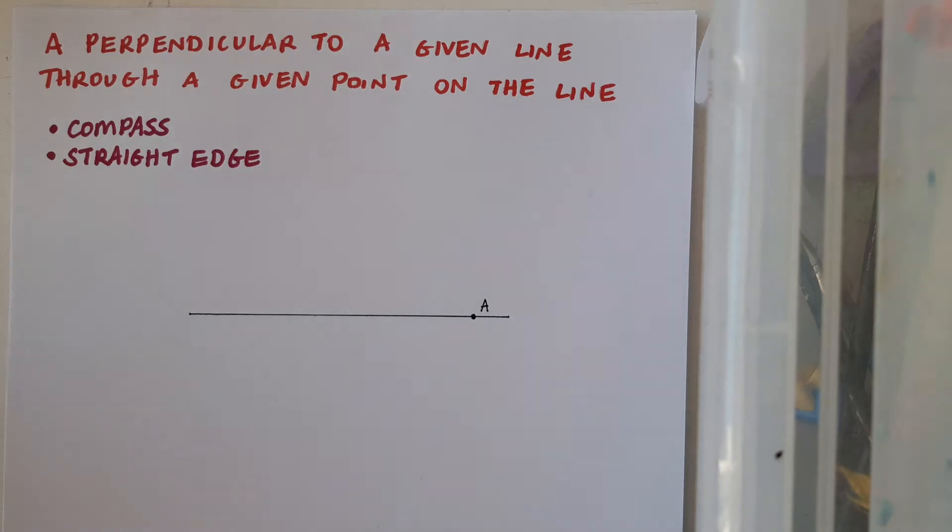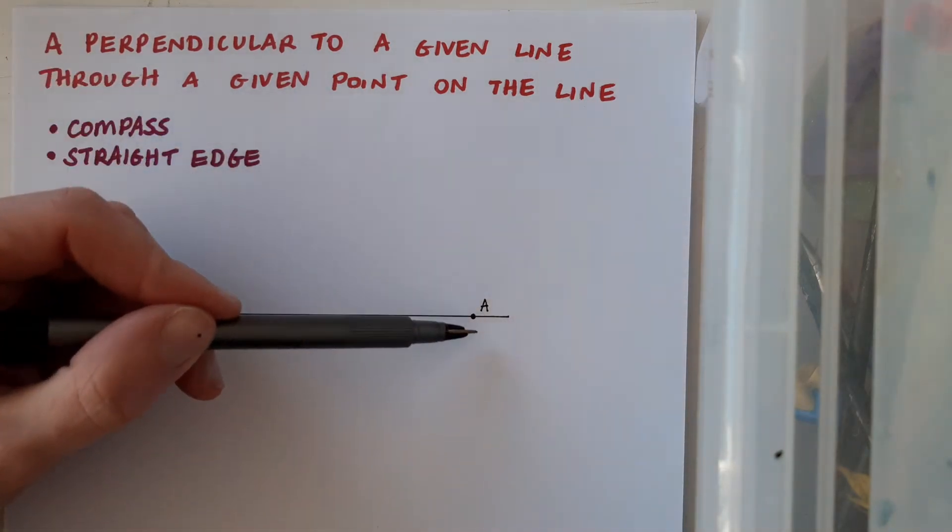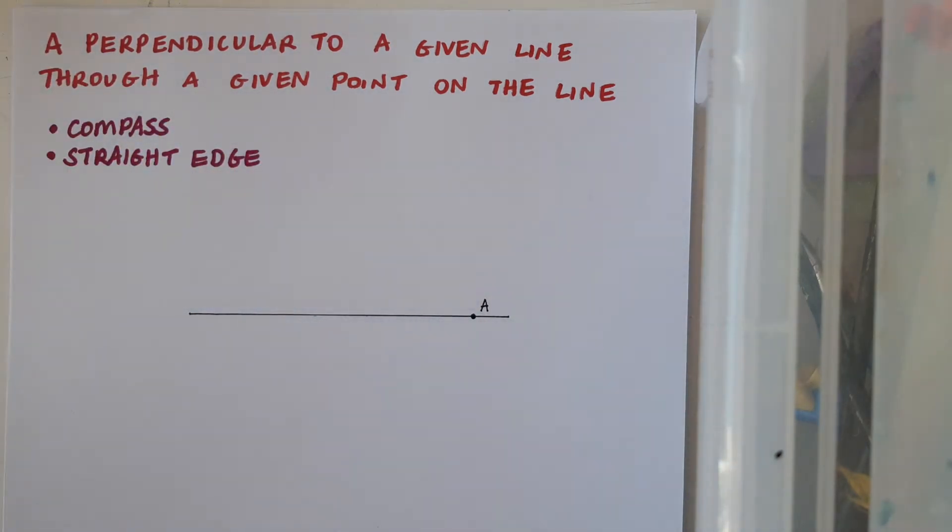In this case here I have my line and I have a point on the line and the point is A. So what I'm aiming to do is to draw a line perpendicular to the existing line through that point A.